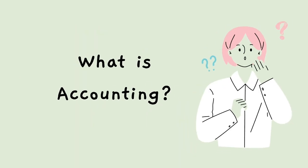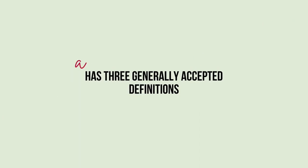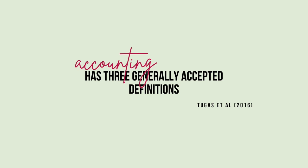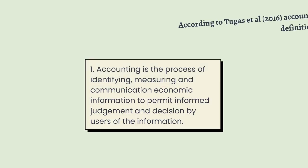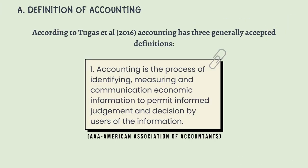What is accounting? According to Tugas et al. 2016, accounting has three generally accepted definitions. First, accounting is the process of identifying, measuring, and communicating economic information to permit informed judgment and decisions by users of the information.